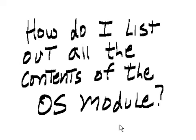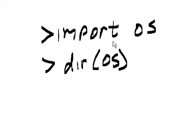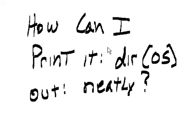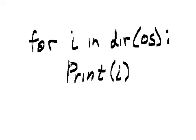How can I list out all the contents of the os module? import os, dir(os). How can I print dir(os) out neatly? For i in dir(os): print i.